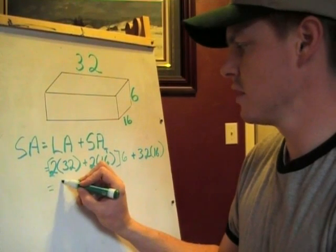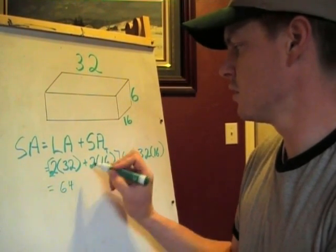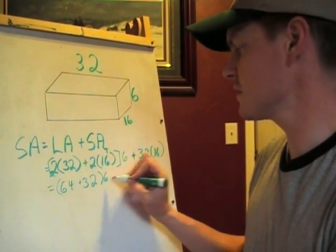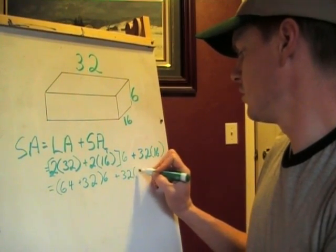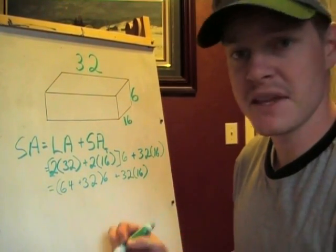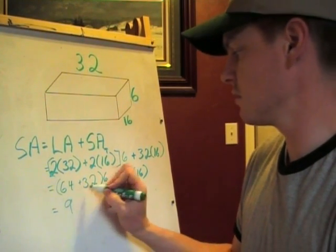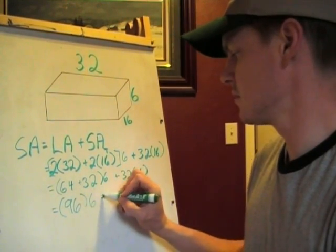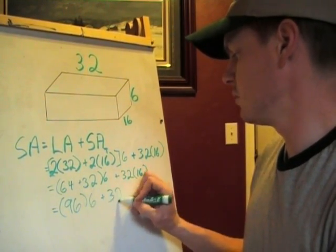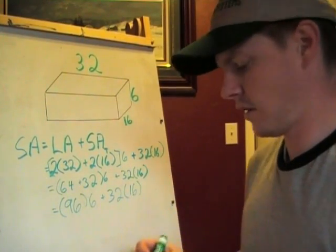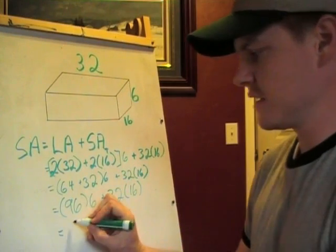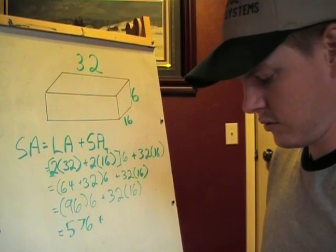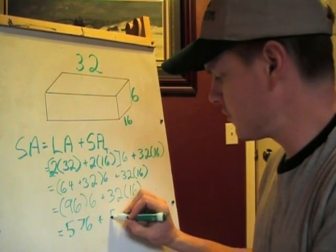Let's go ahead and do a little bit of math here. 32 times 2 is 64. 2 times 16 is 32. We're going to multiply that times 6, plus 32 times 16. This is going to give us our total surface area. 32 and 64 is 96 times 6, plus 32 times 16. 96 times 6 is 576. And 32 times 16 is 512.